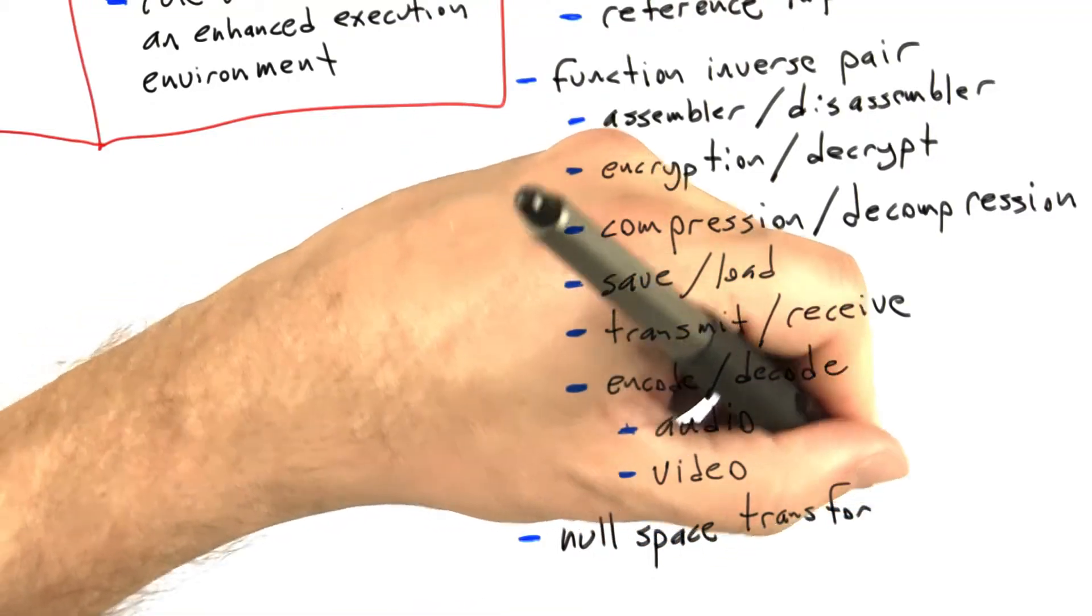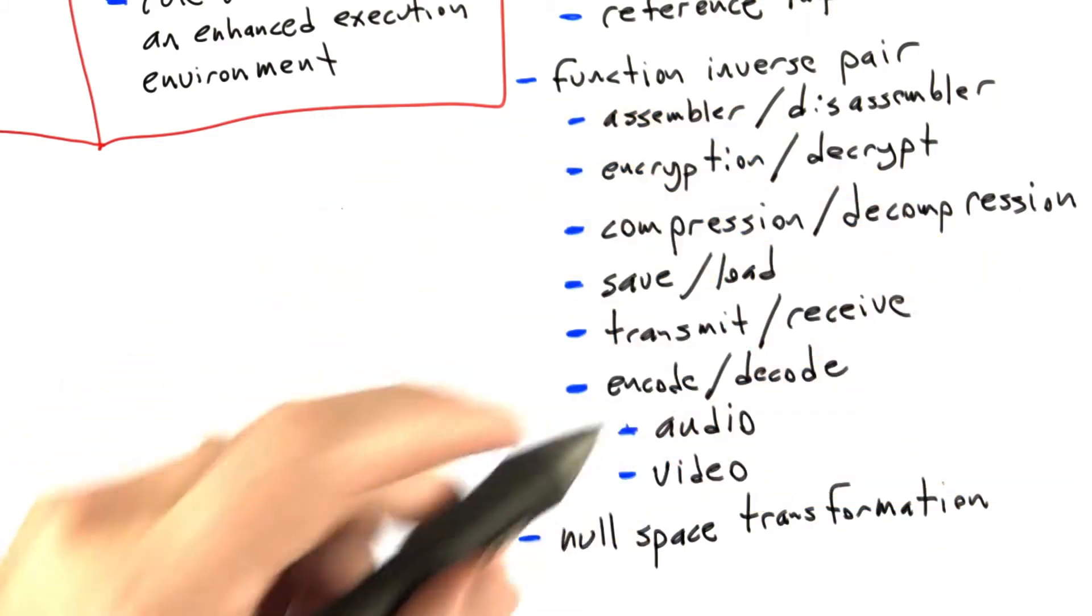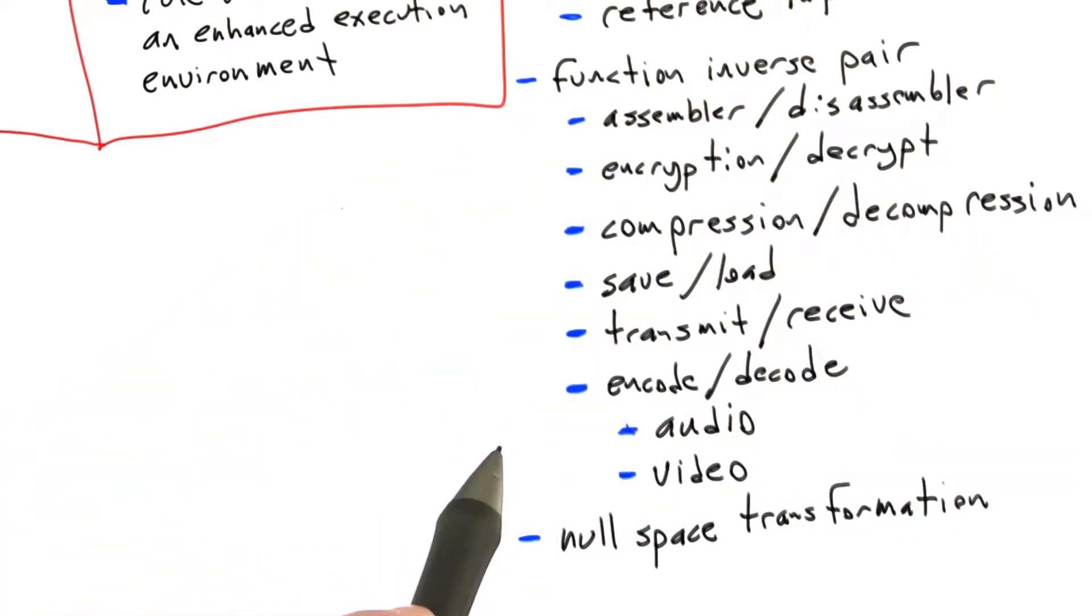So the final strong oracle I want to talk about is what I'm going to call a null space transformation. And this is where we take a random test case, or any test case, and we make some sort of change to it that shouldn't affect how it's treated by the software under test.